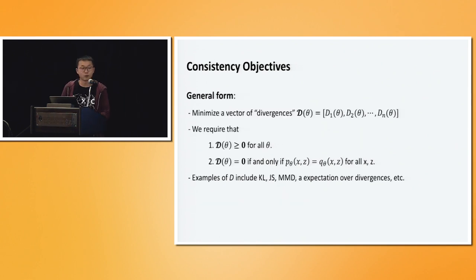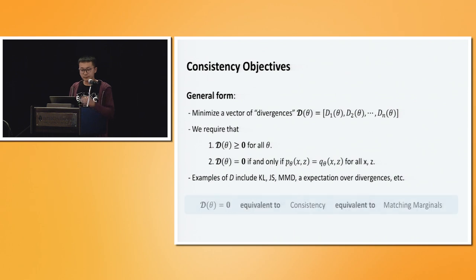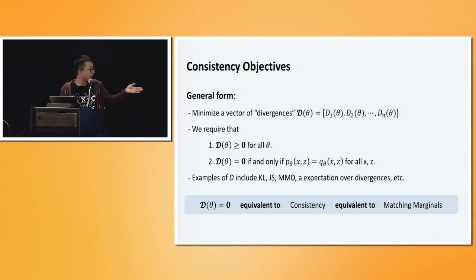In the most general form, we can think of having a vector of divergences. All we require is that they are non-negative, and all of them are zero simultaneously if and only if p equals q, or we have achieved consistency. We can choose all kinds of divergences including KL, Jensen-Shannon, MMD, or an expectation over different divergences. Given this definition, we can equivalently state our objective as asking the divergences to go to zero, which is equivalent to consistency, which is equivalent to matching marginals.